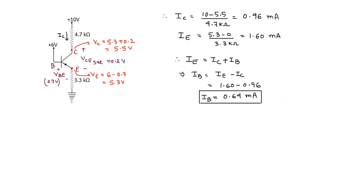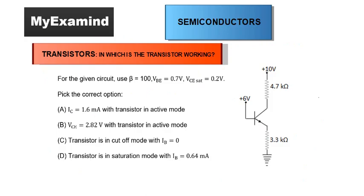This particular configuration has the transistor working in saturation mode with a base current of 0.64mA. Looking at the options, option D must be correct: the transistor is in saturation mode with IB equal to 0.64mA.